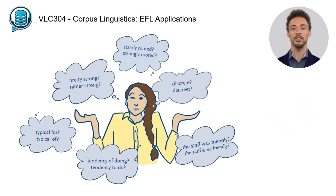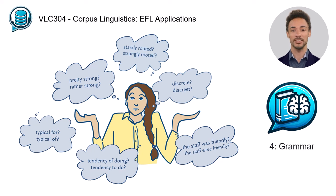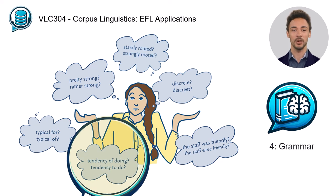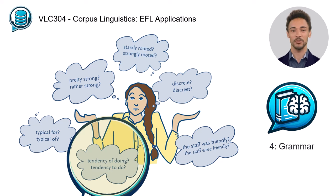Even advanced learners may sometimes stumble over grammatical structures such as tendency of doing something or tendency to do something. You will learn how to apply corpora in order to decide between such structures in Unit 4.